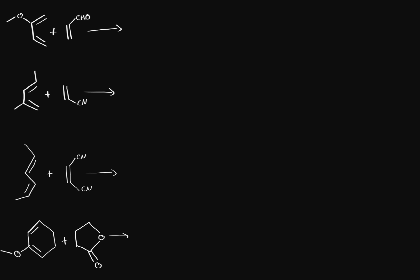Let's start off with the first one. The important resonance contribution for this diene looks something like this — I'm not going to draw the double bonds. We have our lone pair on the oxygen, and it can form a double bond over here. Then this double bond over here can move to become a negative charge on this carbon, and that bond just remains as it is. So that's the most reactive carbon. Now, what about the dienophile? We have our carbon where it's a double bond to the oxygen and the hydrogen.